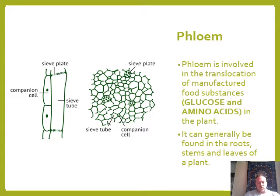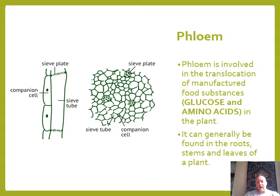Photosynthesis is the manufacturing process, and the food substances are glucose and amino acids. Phloem can be found in the roots, stems, and leaves of plants. It acts like your arteries and veins — this is the equivalent of the circulatory system, but in plants specifically. Note that sieve tubes are dead and hollow, very much like sclerenchyma. The entire inside is hollowed out to create a tube, and sieve plates allow large molecules not to be damaged or get stuck.